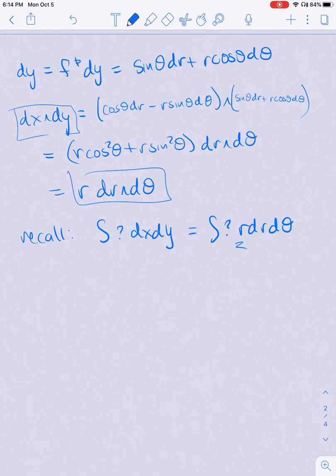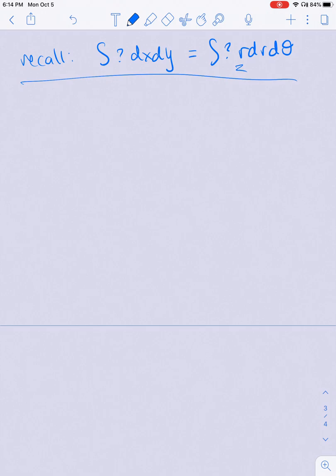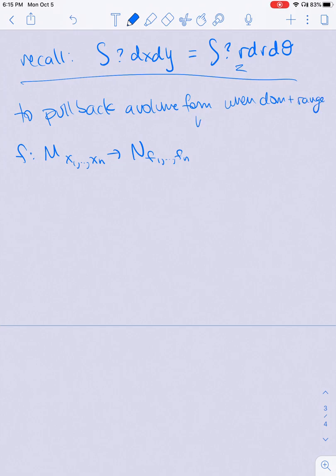And if I want to pull back a volume form, here's another example, or not an example, but just in general what to do to a volume form. So if I have my f from one manifold using coordinates x₁ through xₙ, to my other manifold using coordinates f₁ through fₙ, this only, well, this makes sense more generally, I can always pull back a volume form, but I'm only going to get this nice formula when the dimensions are the same, so when domain and range have the same dimension.